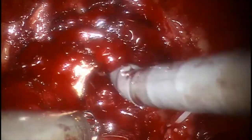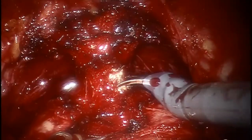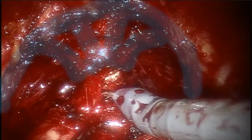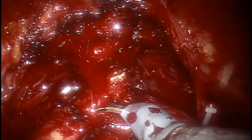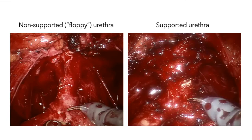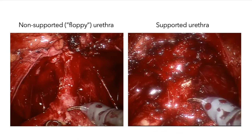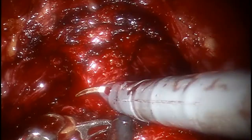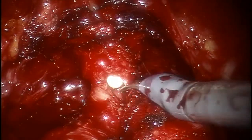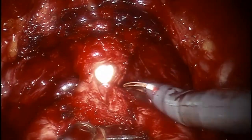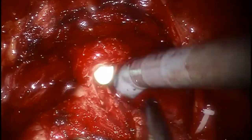In the following case, we bilaterally spared both the endopelvic fascia and the neurovascular bundle. Therefore, as the urethra is fully surrounded by supporting periurethral structures, the full membranous urethral length is not as clearly seen as in those cases where the periurethral supporting tissue is not preserved. However, we are not only preserving the full urethral length, but also ensuring a stable and supported urethra.